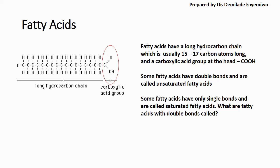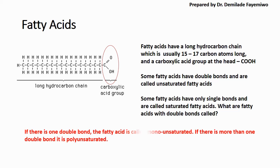When a fatty acid has a double bond in the hydrocarbon chain, we call it an unsaturated fatty acid. Unsaturated fatty acids differ from saturated ones in that you can see double bonds between the carbon and hydrogen in the hydrocarbon chain. If there is only one double bond, we call it a monounsaturated fatty acid. If there is more than one double bond, then it is polyunsaturated. So mono means one double bond, while poly means there are many double bonds within the hydrocarbon chain.